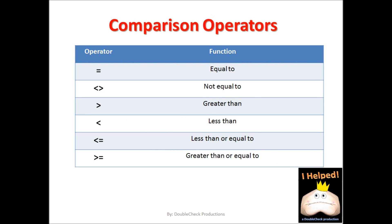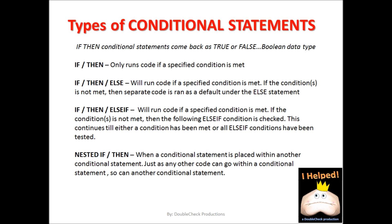The first thing we need to go over are comparison operators. We're all familiar with the equal sign, but let's refresh on some of the others. These operators raise the question of whether or not a relationship between two objects is true or false. For instance, is it true that object A is equal to object B? Or is it true that object A is not equal to object B? All the way down to: is object A greater than or equal to object B? These are Boolean data type values — true or false.